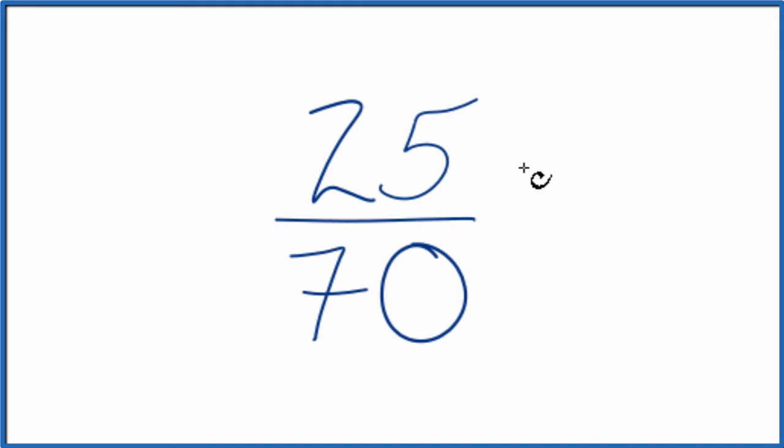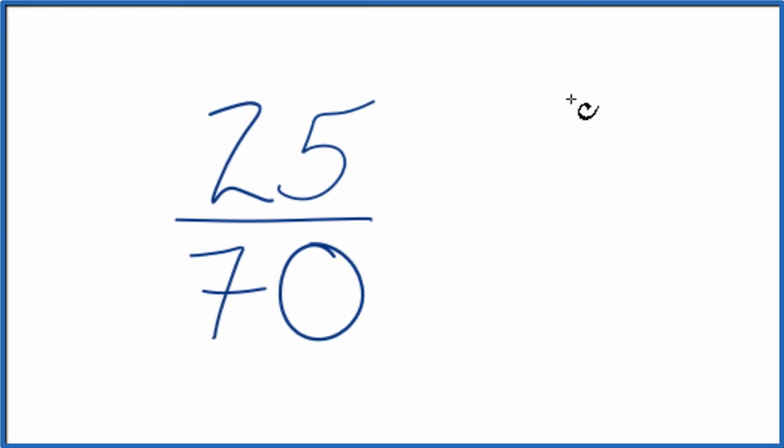And to do that we need to find a common factor, something that goes into 25 and 70. So these are the factors for 25 and 70.